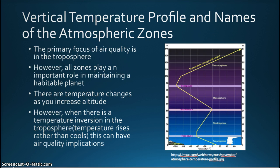From the Earth to outer space, these layers are known as the following: the troposphere, the stratosphere, the mesosphere, and the thermosphere.